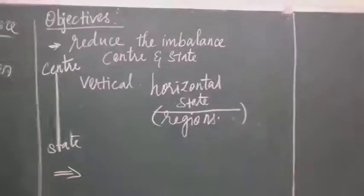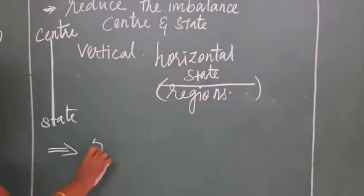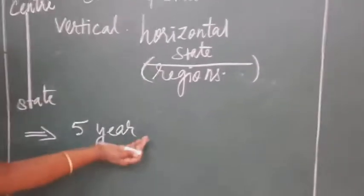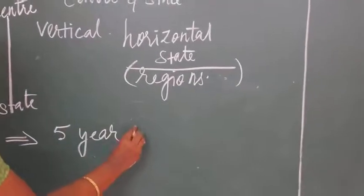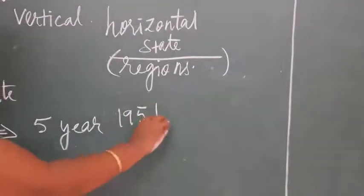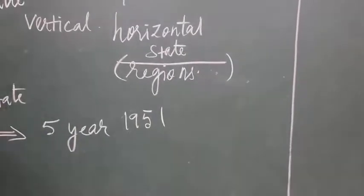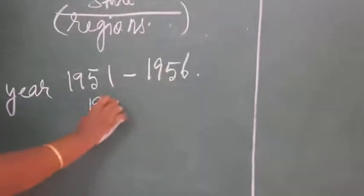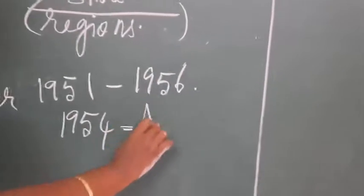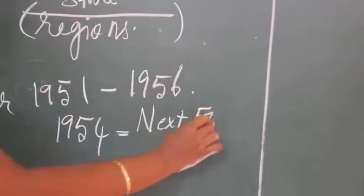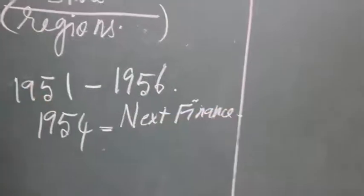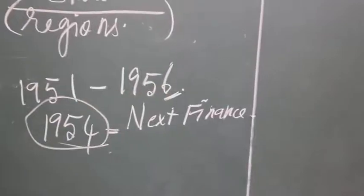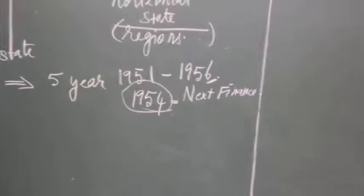The Finance Commission is set up once in five years. However, the next commission is established two years before the current one ends. For example, the first Finance Commission was set up in 1951 and extended up to 1956, so in 1954 they started setting up the next Finance Commission — two years before the end of the period.